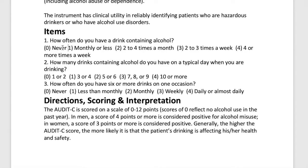Question three: How often do you have six or more drinks on one occasion? Options are: never, less than monthly, monthly, weekly, or daily/almost daily. If the answer to question one is 'never,' you stop there — if someone never drinks alcohol, there is no need to ask the follow-up questions. If any other option is selected, you continue to the next two questions.